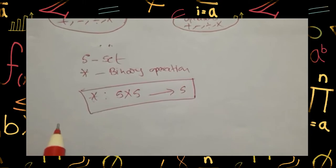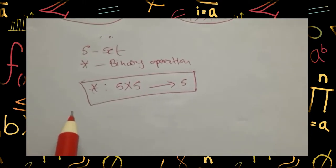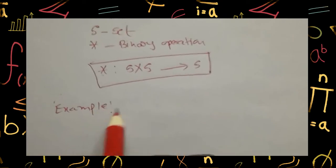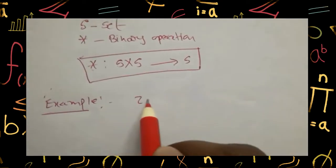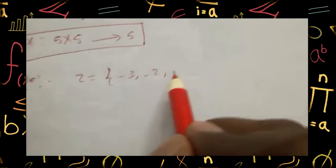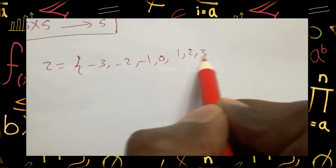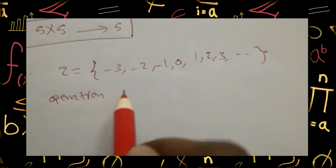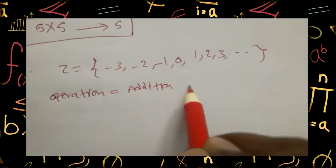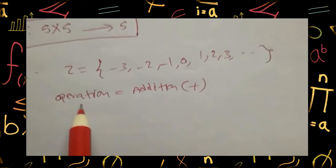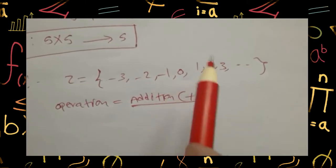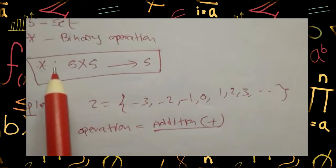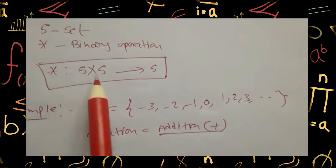Let us see one example so you can understand clearly. Let us take the integer set Z, which equals: minus three, minus two, minus one, zero, one, two, three, and so on. Now I am taking the operation addition, that is plus. Is this operation a binary operation on Z or not? Binary operation means it maps from S cross S to S.